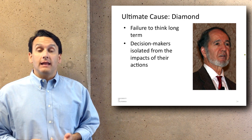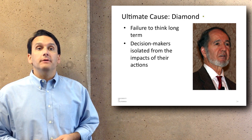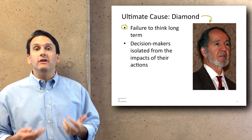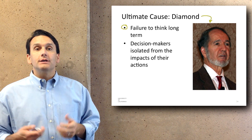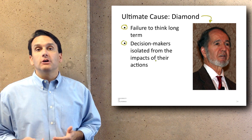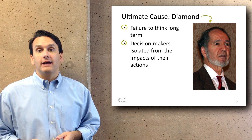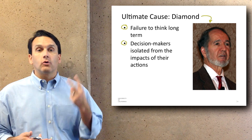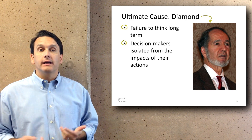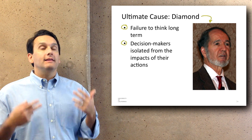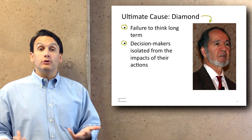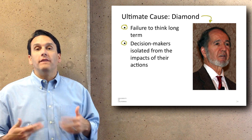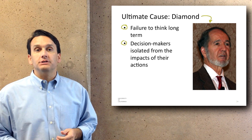Another scholar who thinks a lot about collapse is Jared Diamond, and his point is that the ultimate cause of collapse is a failure to think long term. The decision makers are isolated from the impact of their actions. When the people in charge of Rome, Easter Island, or the Mayans were doing their planning, they weren't taking into account the long-term impacts of the decisions they were making.